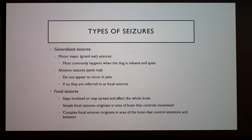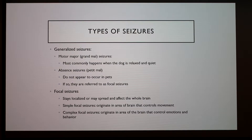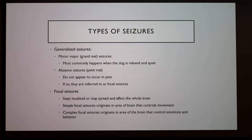Simple focal seizures originate in the area of the brain that controls movement. Usually this will start out in their face first — like rapid eye twitching or lip twitching — and then it can spread to other areas and affect their limbs as well. Complex focal seizures originate in the area of the brain that controls emotions and behavior, so this will affect their limbs first. They could paddle their legs really fast, may start barking, and even urination or defecation can occur.